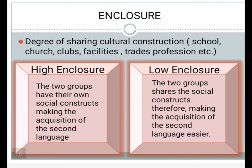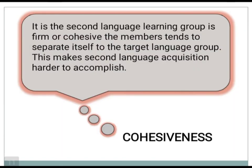The next factor is enclosure, which means the degree of sharing cultural constructions such as schools, churches, clubs, facilities, trades, and professions. There are two types: high enclosure, where the two groups have their own separate social constructs making second language acquisition harder, and low enclosure, where the two groups share social constructs, making second language acquisition much easier.